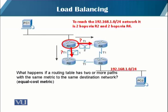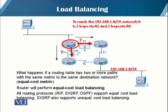What happens if a routing table has two or more paths with the same metric to the same destination network? We call it equal cost metric. If this situation arises, the router will perform equal cost load balancing. As shown in the diagram, to reach the 192.168.1.0/24 network, it is two hops away via R2 and two hops away via R4 — so the hop count metric is the same. The routing protocol will distribute the load. RIP, OSPF, and EIGRP all support equal cost load balancing, and EIGRP also supports unequal cost load balancing.